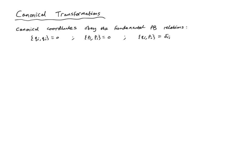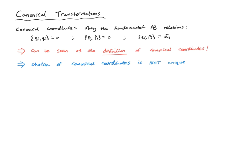The fundamental Poisson bracket relations can be seen as the definition of canonical coordinates — the defining feature of canonical coordinates is that they obey these relations. This begs the question of whether the choice of canonical coordinates is unique. The answer is no: there are other coordinate choices that also satisfy the fundamental Poisson bracket relations. The coordinate transformation from one set of canonical coordinates to another is referred to as a canonical transformation.